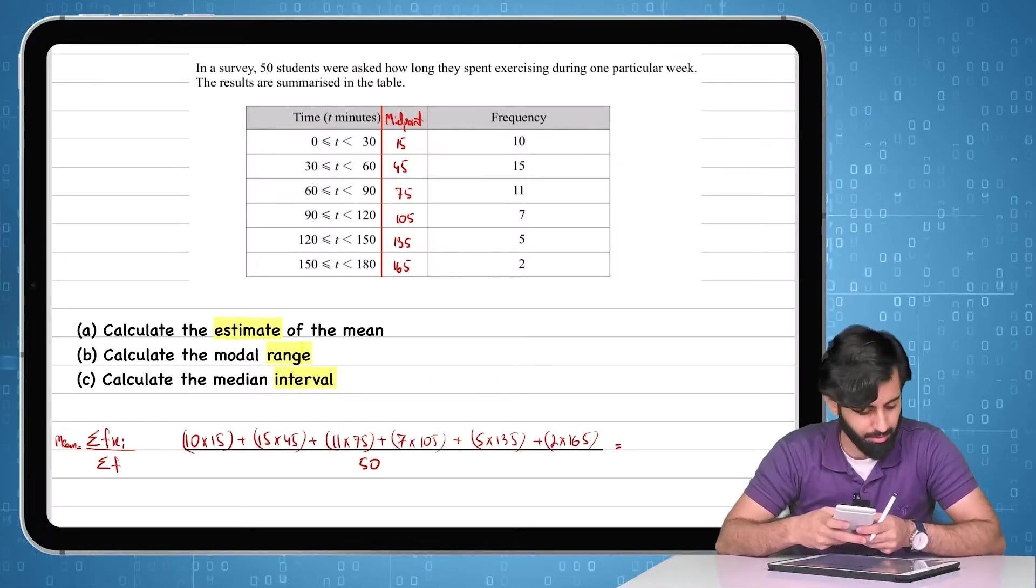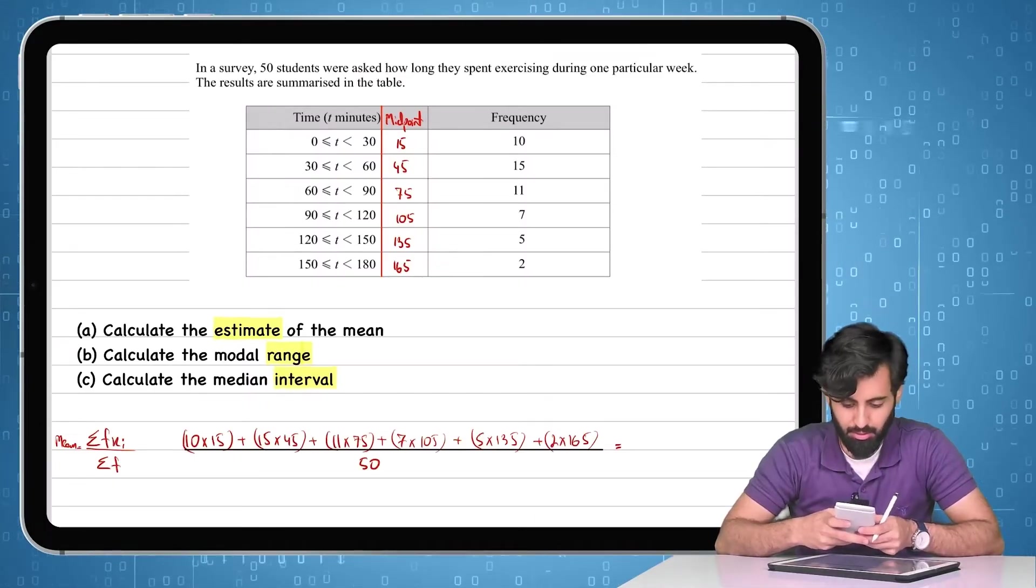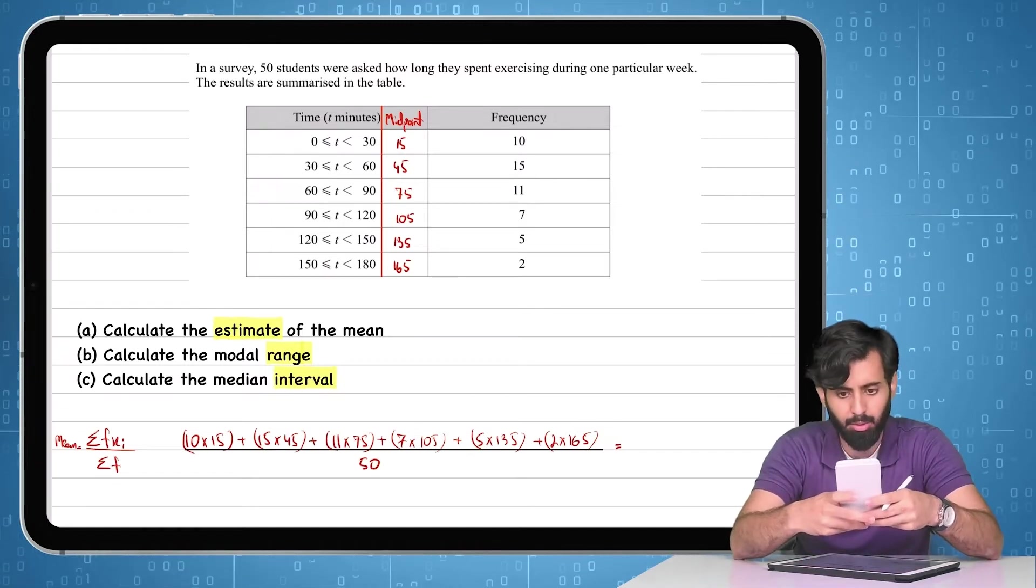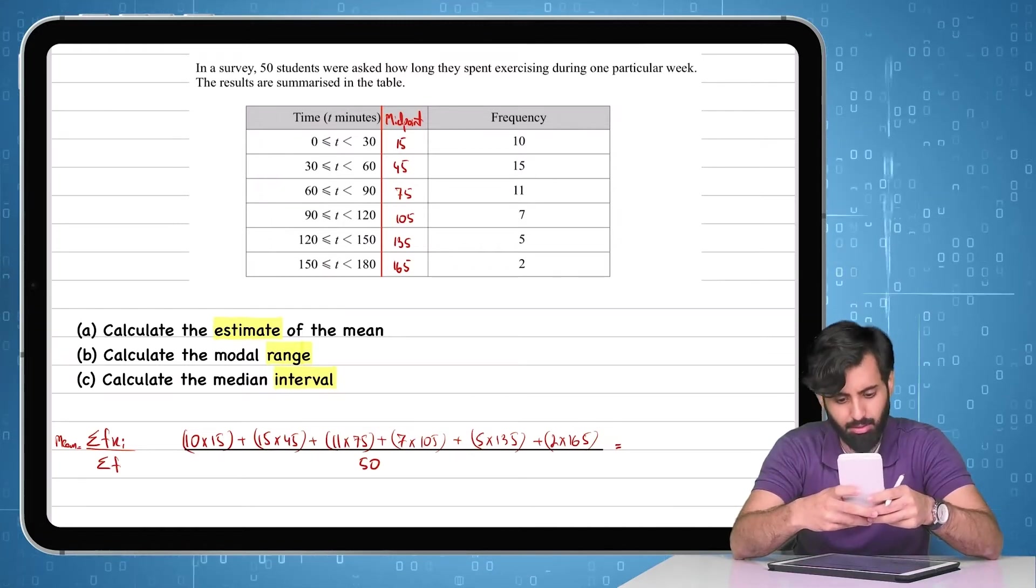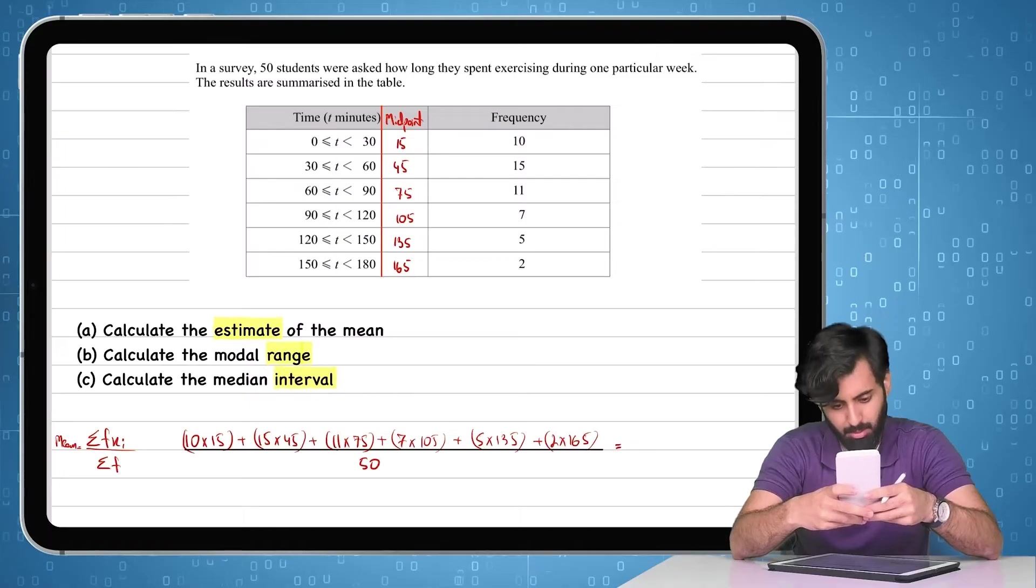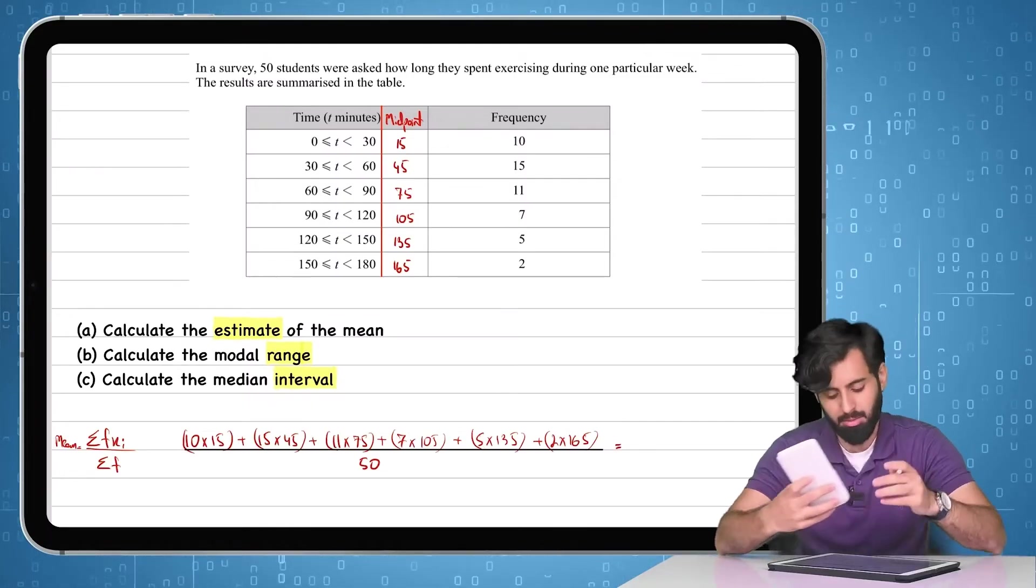So 10 into 15, plus 15 into 45, plus 11 into 75, plus 7 into 105, plus 5 into 135, plus 2 into 165.